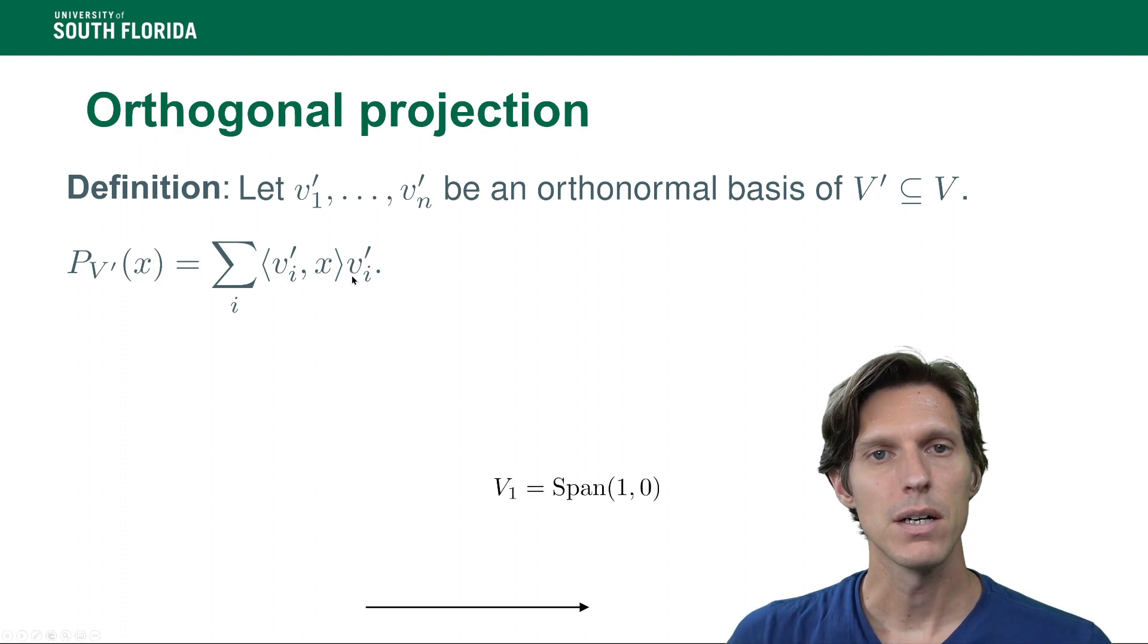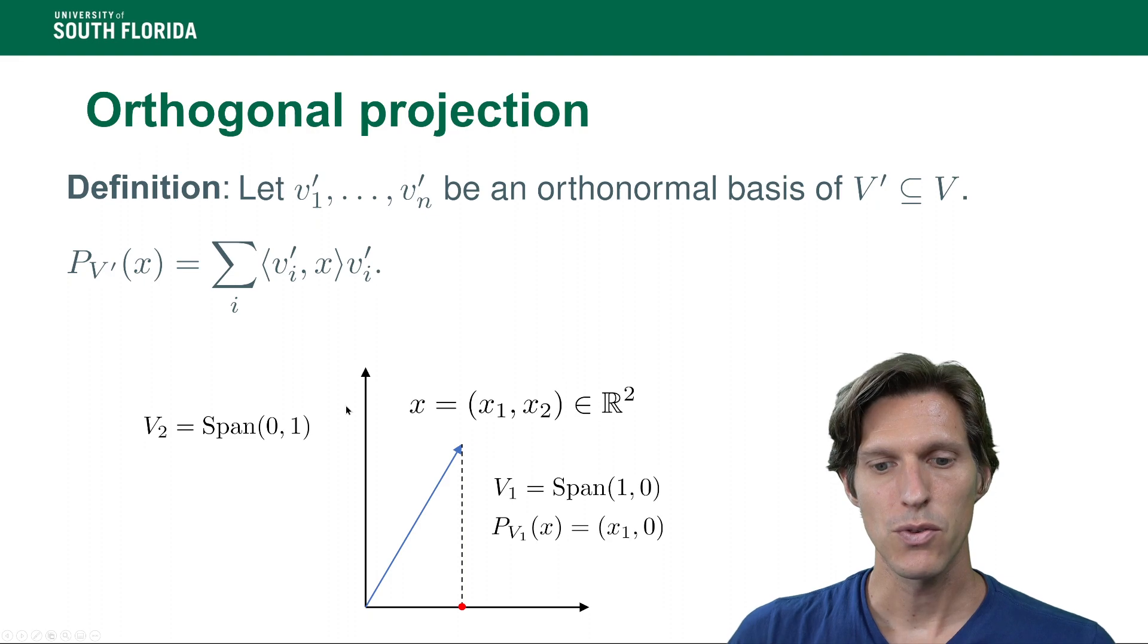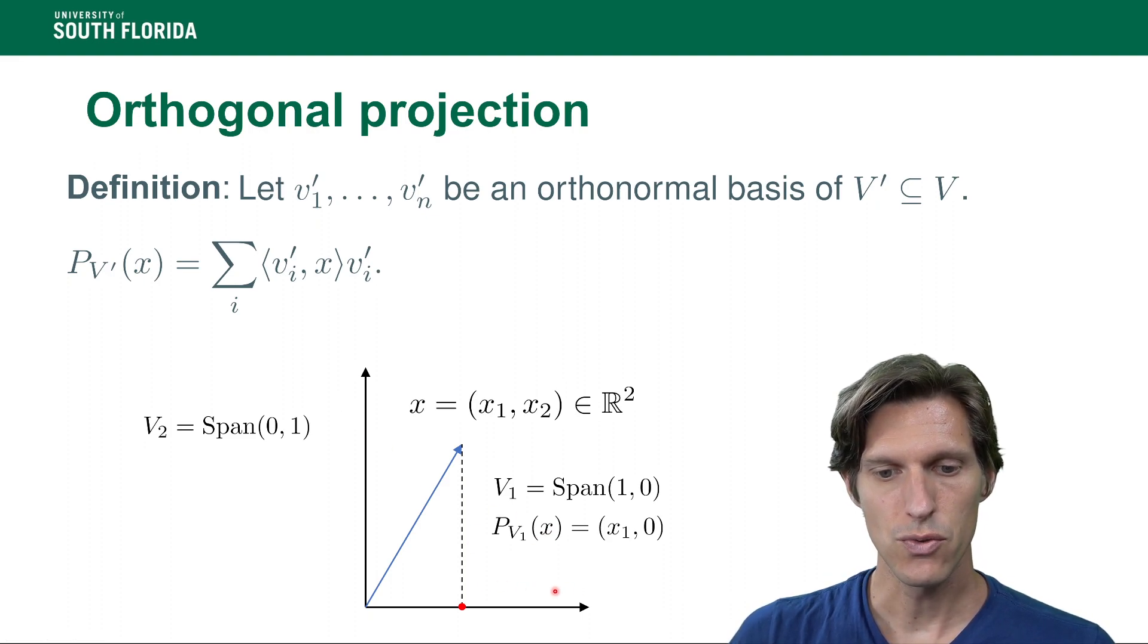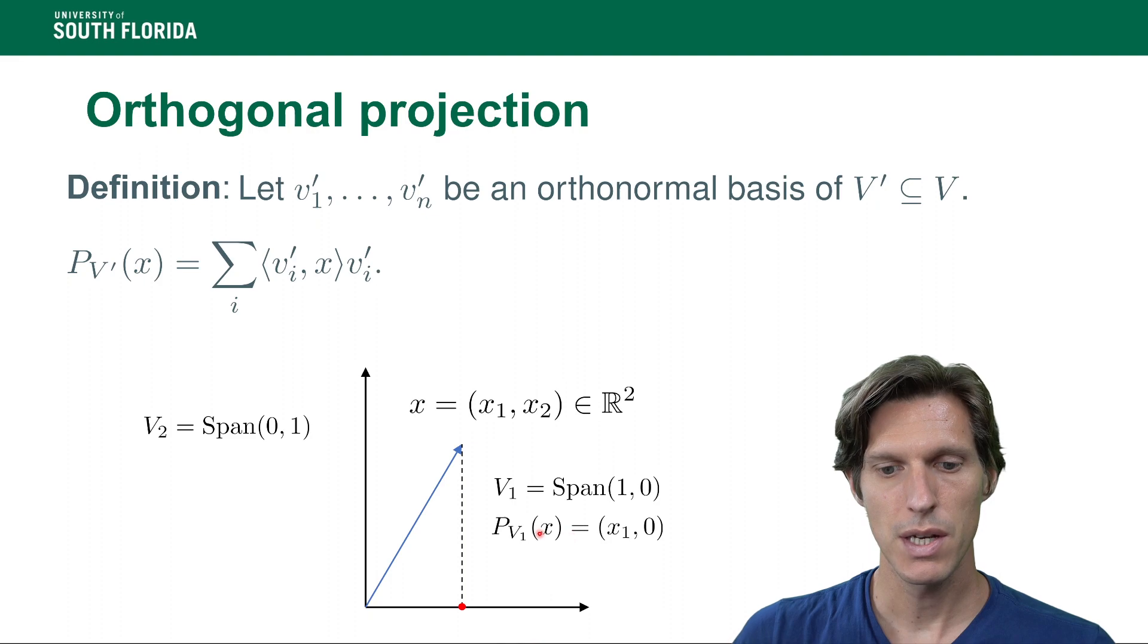Now let's look at an example. If we have the basis given by (1,0) and (0,1), then the orthogonal projection onto this space V₁ which is the span of (1,0), then the projection onto V₁ is just ⟨x,(1,0)⟩ times (1,0). So that's just (x₁,0).